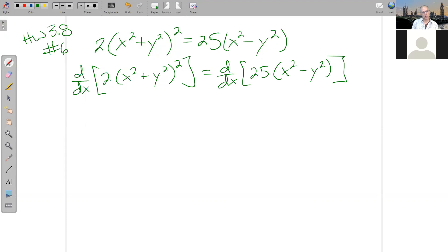So the 2 up front here, we can just pull that out because it's a constant multiple.